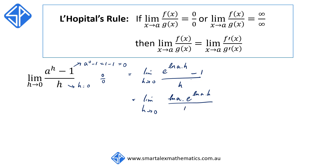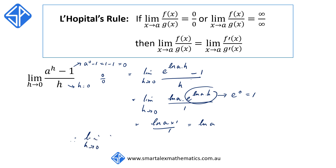Next, we substitute h equals 0 into this expression. When we do that, e to the (log a times 0) approaches e to the 0, which equals 1. So what we have is log(a) times 1 over 1, which is simply log(a). Therefore, the limit as h approaches 0 of (a to the h minus 1) over h is equal to log(a).